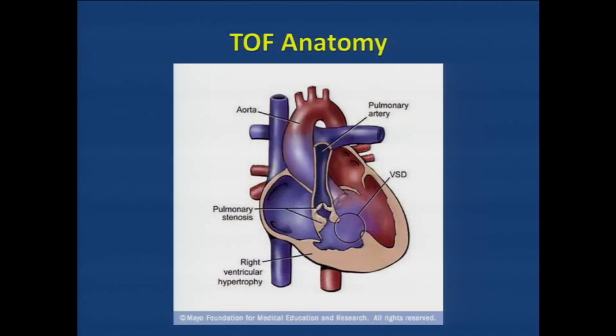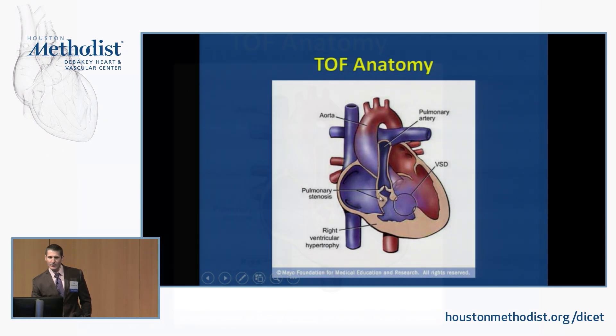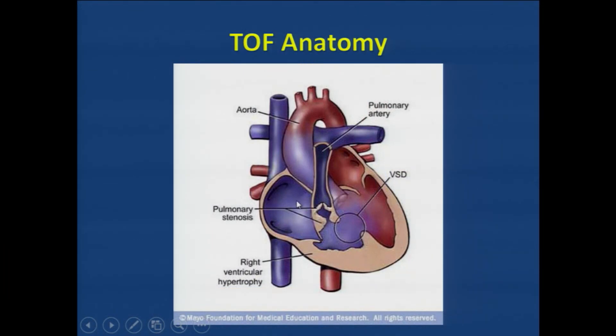What the hell is an overriding aorta? I remember when I was learning about Tetralogy of Fallot, that was nebulous to me. So, when talking about an overriding aorta, what they mean is that the aorta kind of straddles the VSD. Also, the stenosis of the pulmonary valve is not just at the level of the pulmonary valve — it's at the level of a muscle bundle just beneath the pulmonary valve called the infundibulum, or the conus.